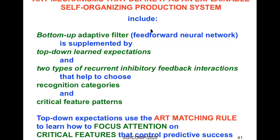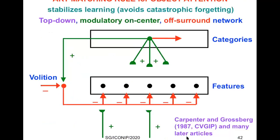ART includes a bottom-up adaptive filter of a feed-forward neural network, but that is supplemented by top-down learned expectations and two types of recurrent inhibitory feedback interactions that help choose the recognition categories and the critical features. Notably, top-down expectations use what Gail Carpenter and I call the ART matching rule to learn how to focus attention on critical features that control predictive success. The ART matching rule is a computational description of object attention — how we pay attention to salient objects in the world — and it stabilizes learning, thereby avoiding catastrophic forgetting.